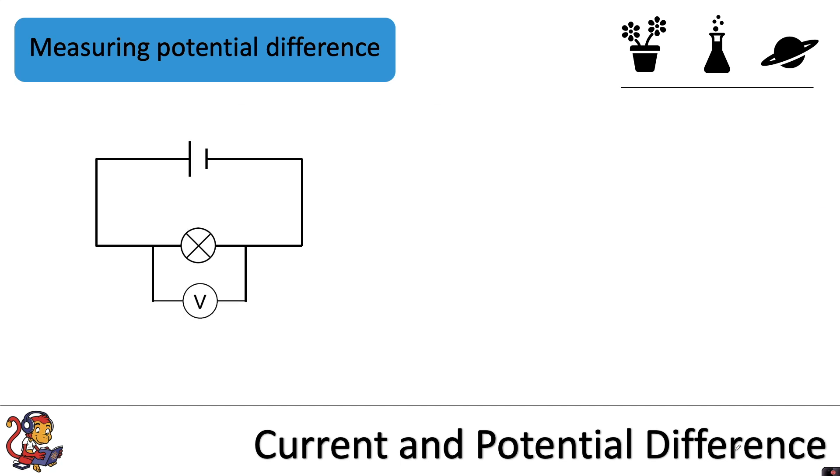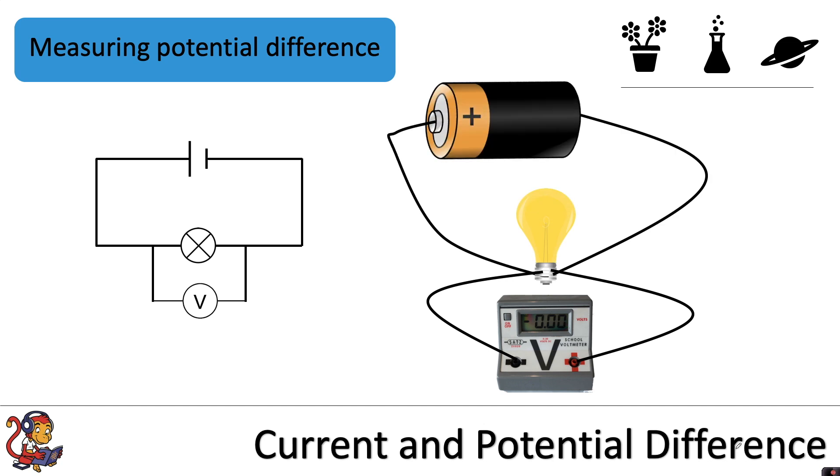So this is what the circuit diagram would look like if we wanted to measure the potential difference of the lamp. And in reality your circuit might look something like this, where you've got your cell here, and then your lamp, and then two wires either side of your lamp going to your voltmeter, which are these wires here and here.